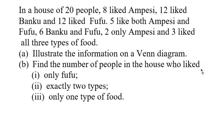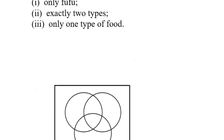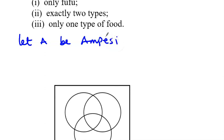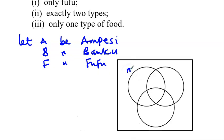Let's see how we are going to solve this, and also the marking scheme for how this question was scored. First, how to draw our Venn diagram. Let A be Ampesi, B be Banku, and F be Fufu. The number of people who like Ampesi is 8, Banku is 12, and Fufu is 12, as given in the question.